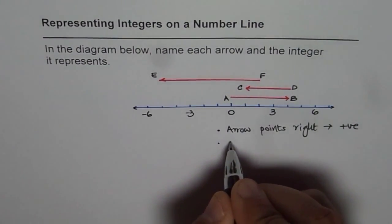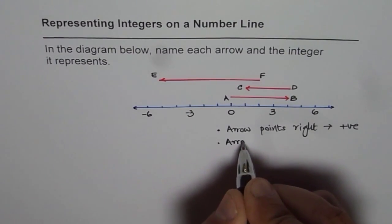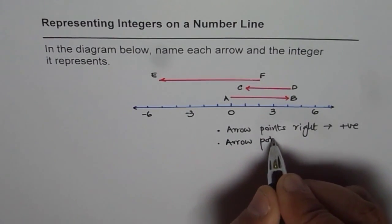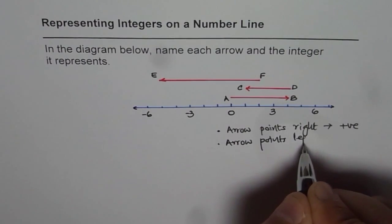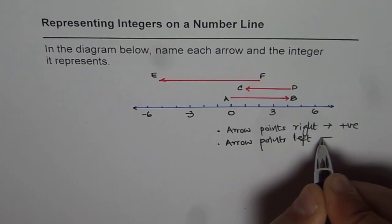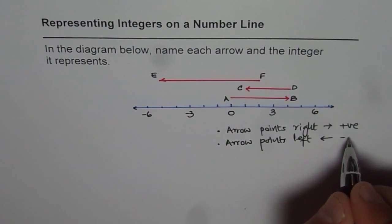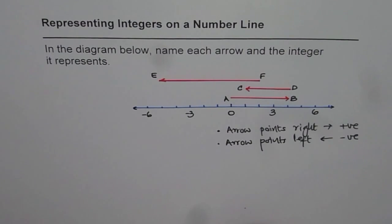And if the arrow is left, if it points in left direction, in that case like this, then the integer is negative. That is one thing.